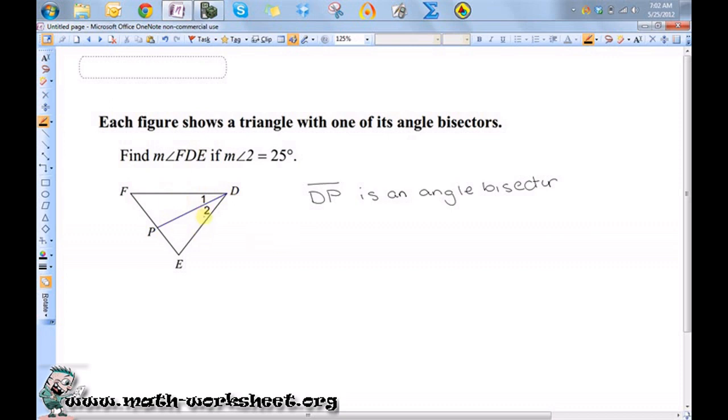So if I want to find the measure of angle FDE, I know that one half the measure of angle FDE is equal to the measure of angle 2, because I know that angle 2 is half of that.